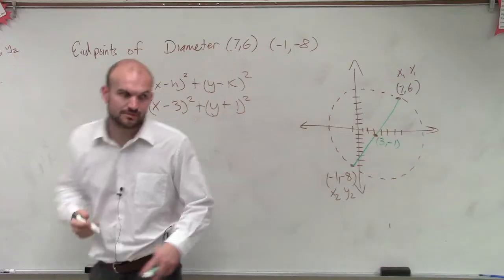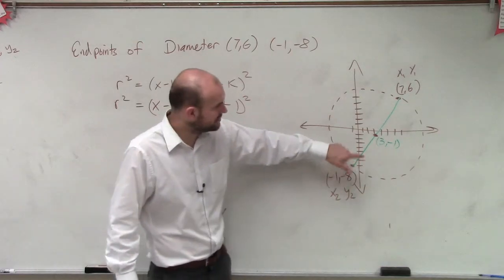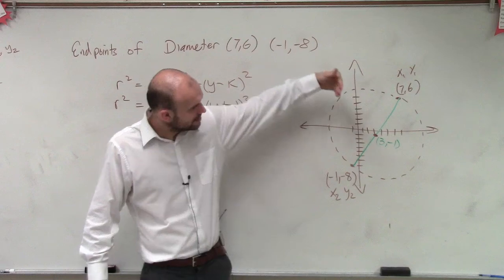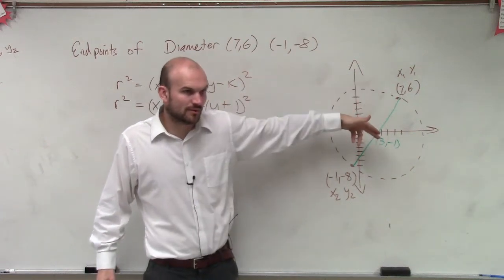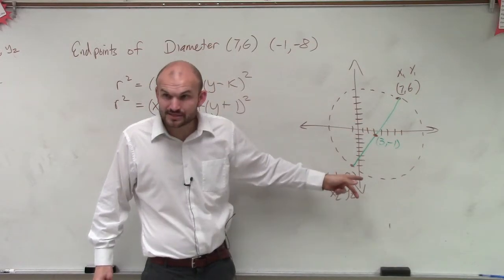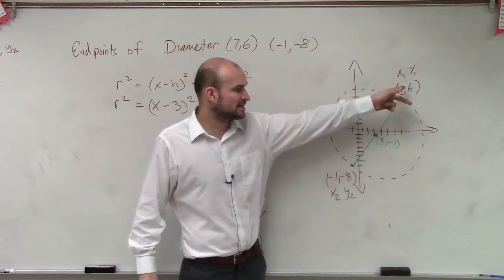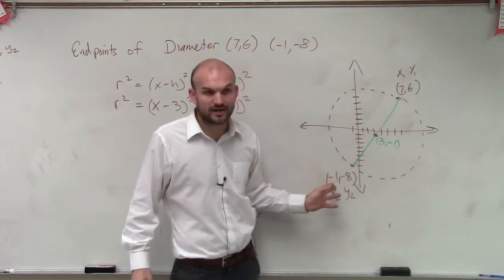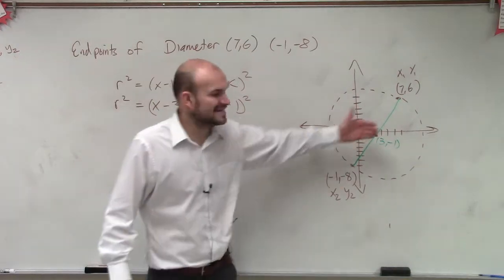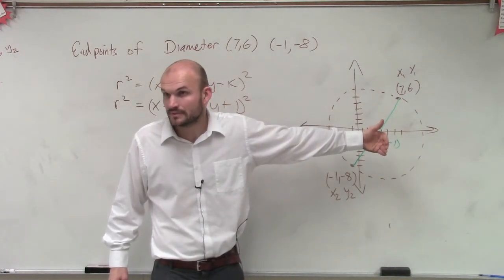So what I'm going to want to do now is figure out my r. So I figured out what the midpoint was, but now I need to figure out what is that distance from the center to one of my points. So I need to pick which point do I want to find the distance from: (3,-1) to (7,6), or (3,-1) to (-1,-8)? It doesn't matter, Alex, because the distance has to be exactly the same, because it's the radius, right?